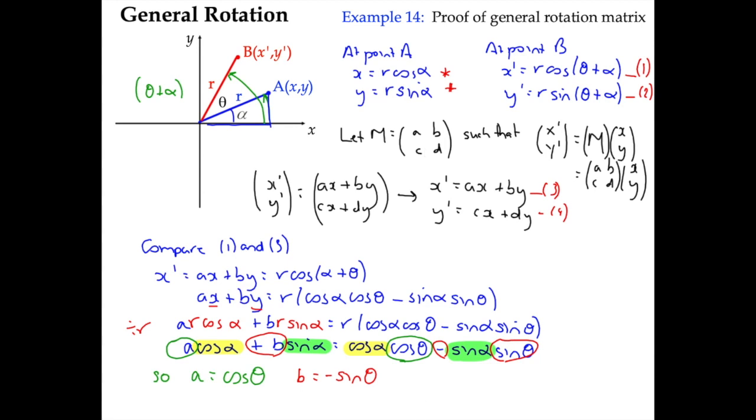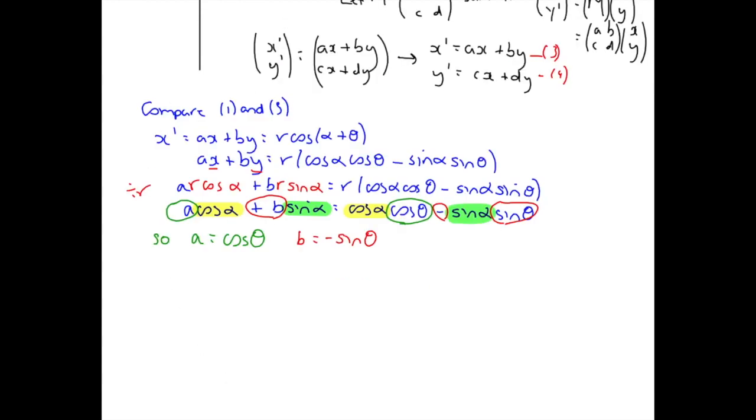Now, what we can do here is to repeat the process with equations 2 and 4. We could say that, we know that Y dash, the image of Y, is R sin alpha plus theta, but it's also equal to Cx plus dy. So, we can repeat the whole thing again. We can say, compare 2 and 4. So, what we're saying here is that Y dash, we've said, is Cx plus dy. And we've also said, back up in number 2, that it's equal to R multiplied by sin alpha plus theta.